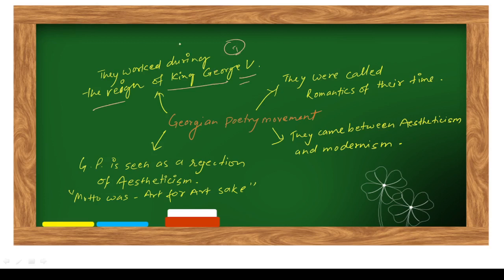They were called romantics of their time, and why they were called romantics we will discuss later. They came between aestheticism and modernism. So there were two movements - first was aestheticism and second was modernism, and in between there was Georgian poetry movement.